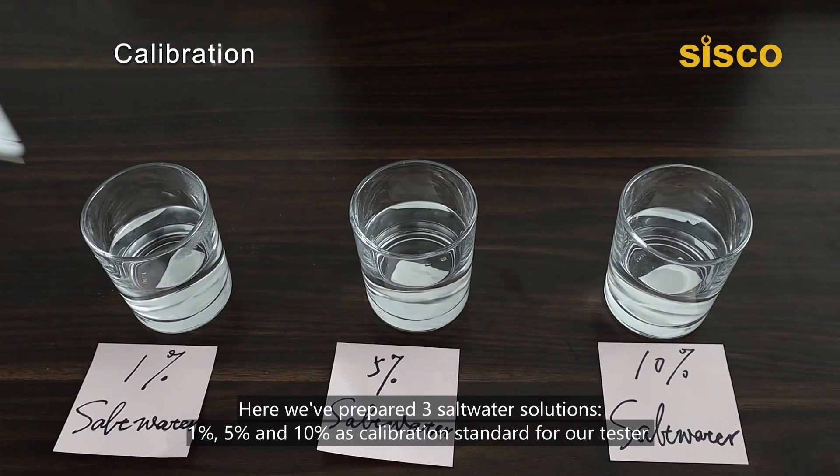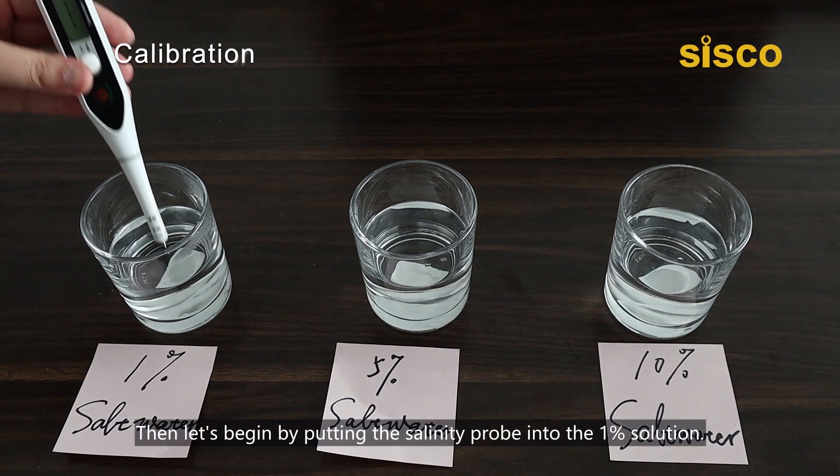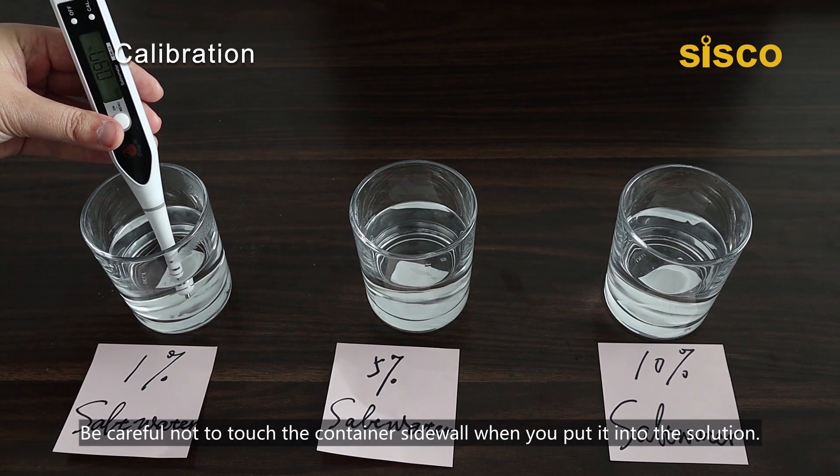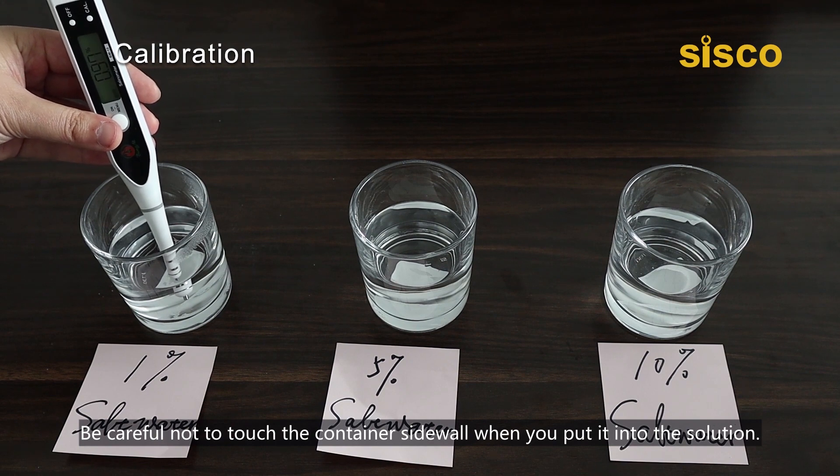Here we've prepared three salt water solutions: 1%, 5%, and 10% as calibration standards for our tester. Then let's begin by putting the salinity probe into the 1% solution. Be careful not to touch the container sidewall when you put it into the solution.